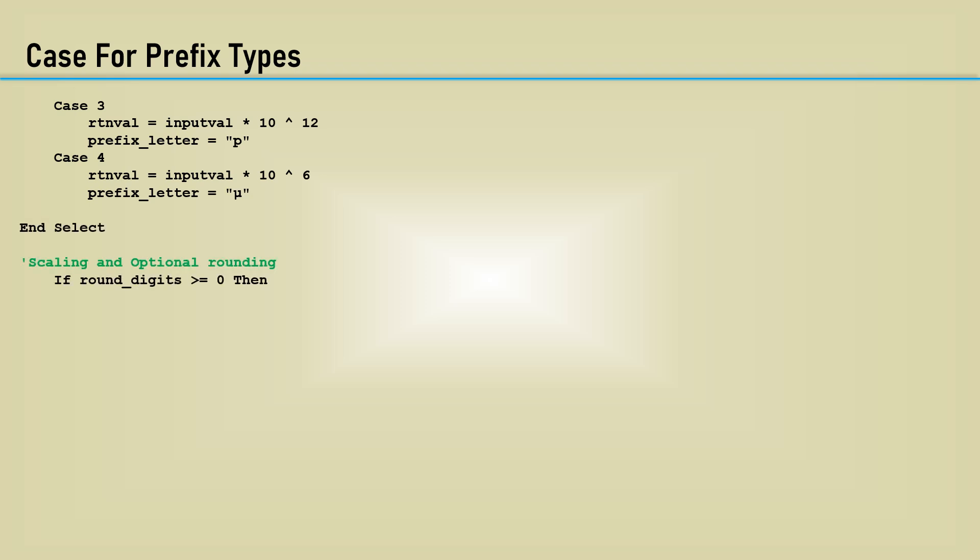If the round digits argument is greater than or equal to zero, the return value is a rounded version of the return value with the number of rounded digits.